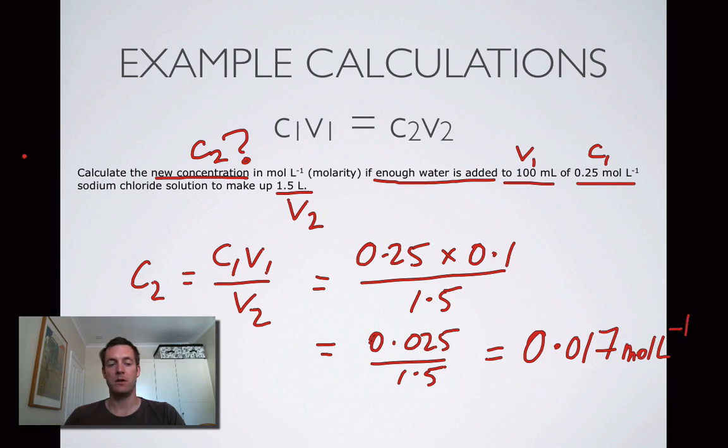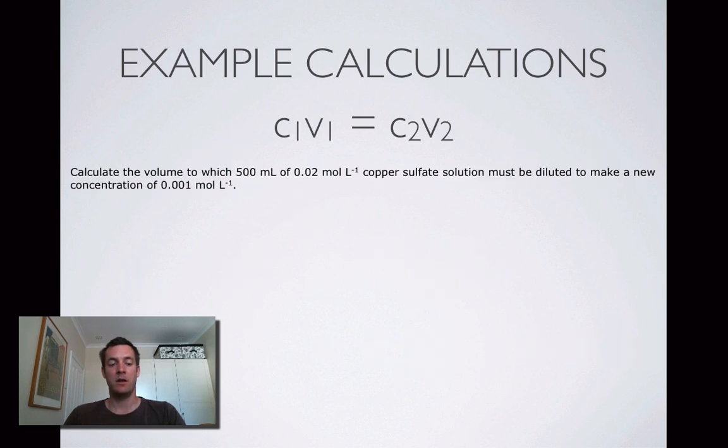Here's another example. This time we're not being asked to find the concentration, we're being asked to find the volume to which this must be diluted. In other words, this is our new volume V2. We're starting off with 500 mL, that's our original volume, and we're starting with a solution that has this concentration, so there's C1. Here's our new concentration C2.